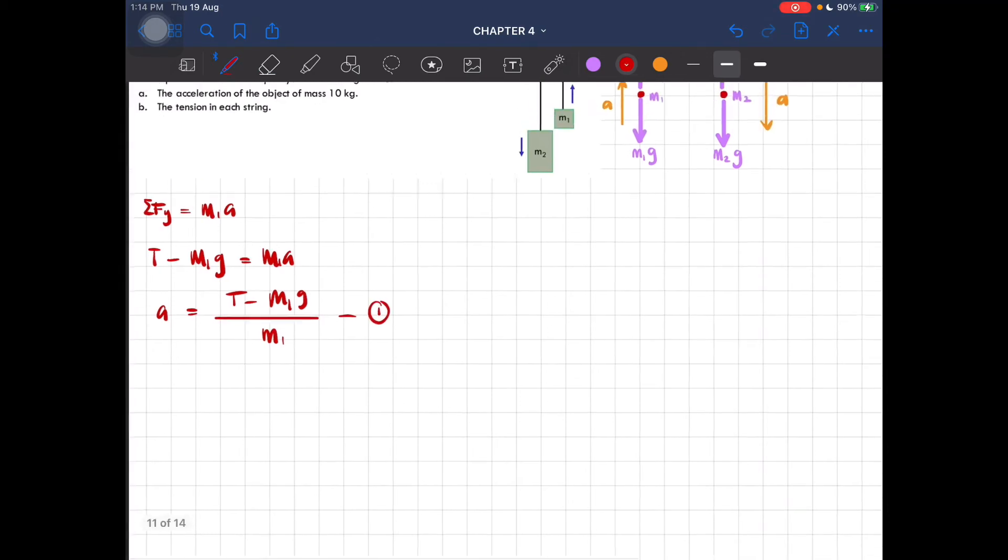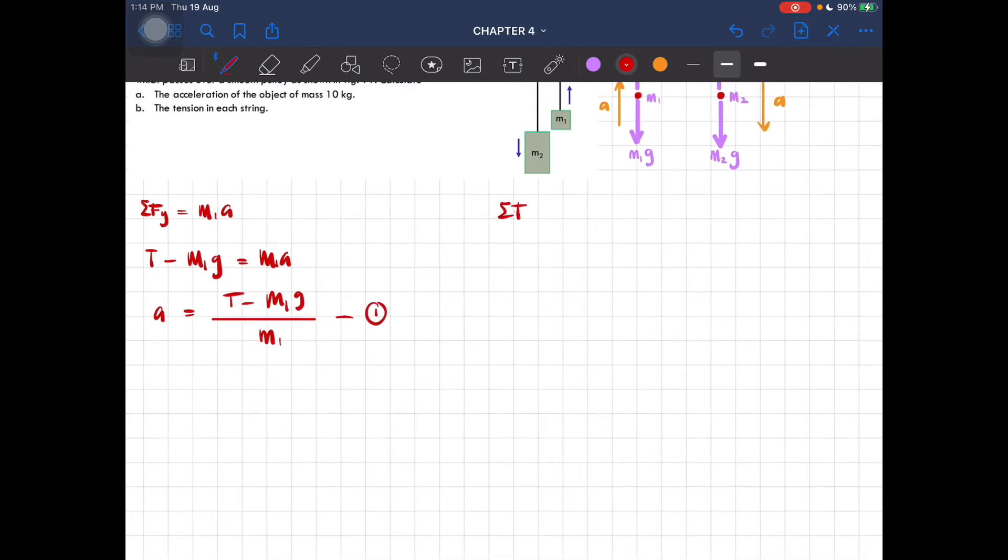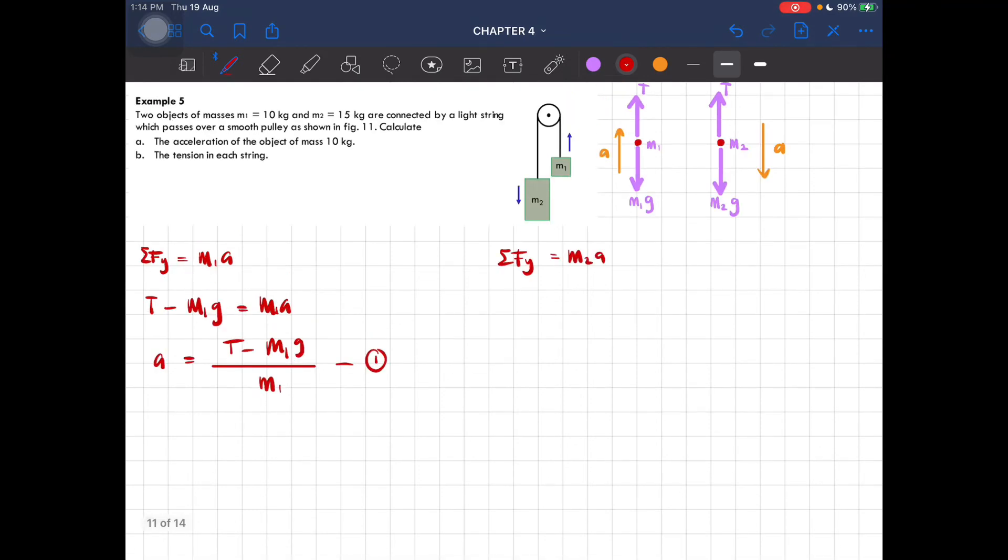Let's look at the second block. Total force at y equals m2a. Now m2g is positive minus T equals m2a. So now we can let this T equal to m2g minus m2a. This is equation two.